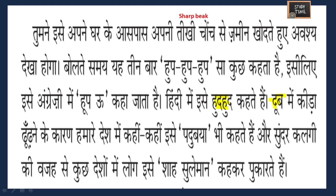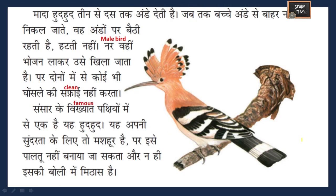Because of its beautiful crest - sundar kalgi - it is called 'Shah Sulayman' in many countries. The female Hudhud lays three to ten eggs - teen se das ande - and until the chicks come out of the eggs, the mother stays on them without moving.